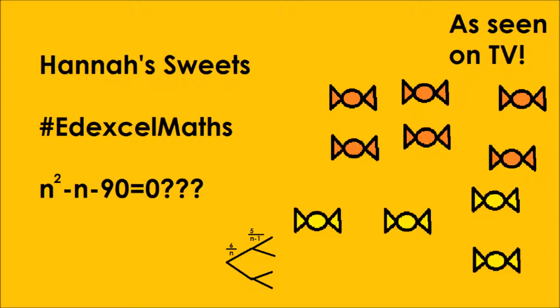As far as I can remember, this is the question. Hannah has n sweets in a bag, 6 are orange and the rest are yellow. She takes a sweet at random and eats it, she takes another sweet at random and eats it. The probability that both sweets are orange is a third. Show that n squared minus n minus 90 equals 0.